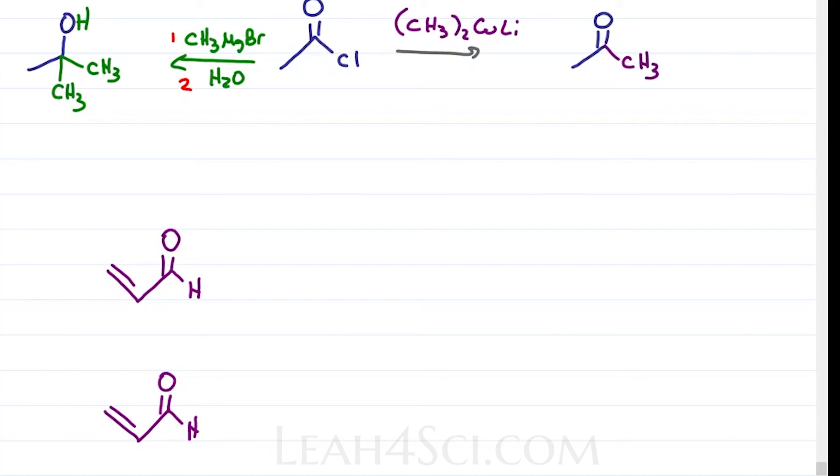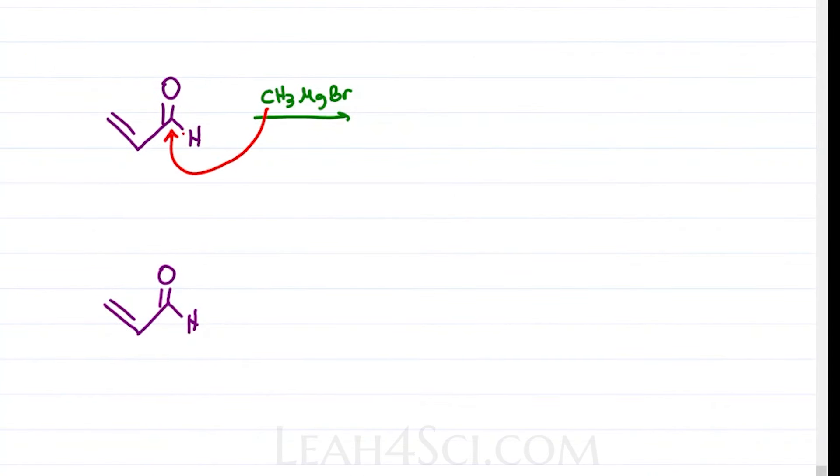Another place you'll see a clear distinction is the Michael addition which I discuss in detail at the link below, where the Grignard will do a 1-2 attack directly at the carbonyl, where the Gilman will give us a 1-4 attack at the beta position for two very similar yet very different products.